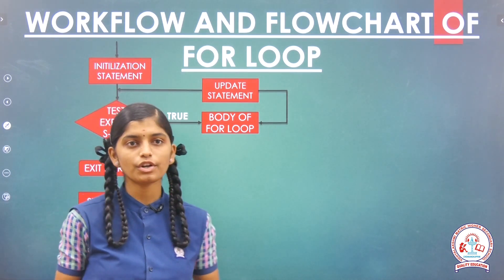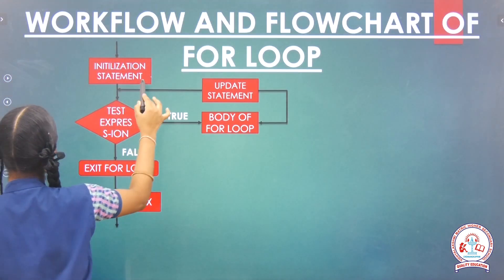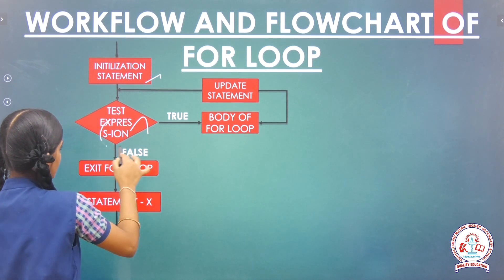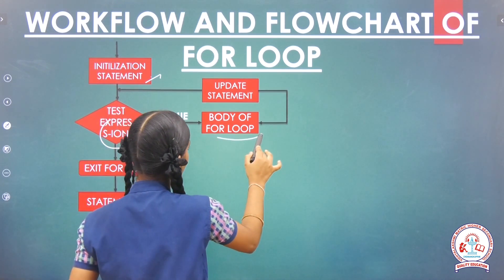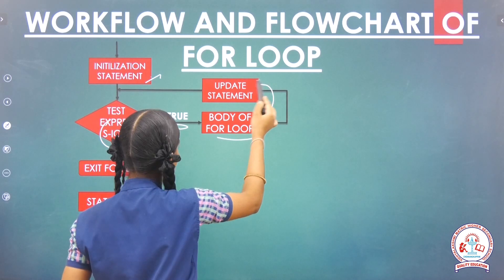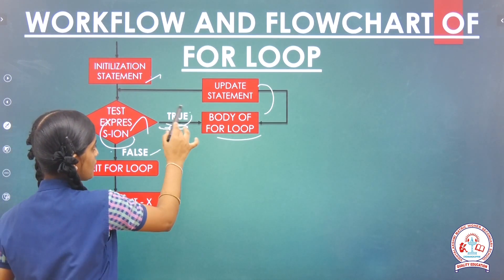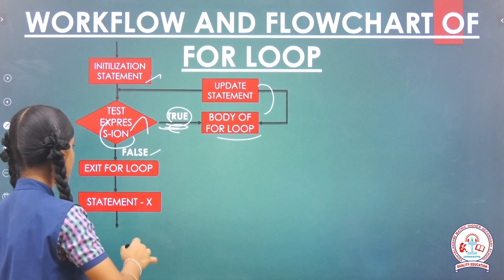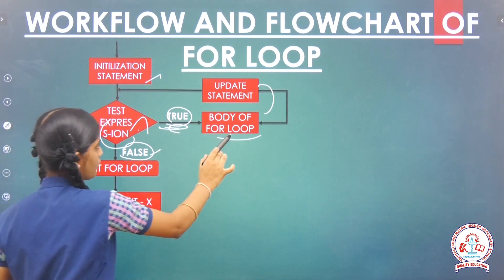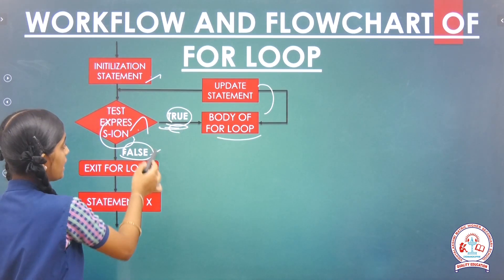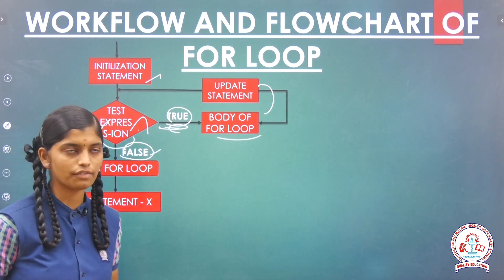Next, what is the workflow and flowchart of the for loop? First, the initializing statement will be executed. Next, it will move on to the test expression, where true or false will be determined. If the condition is true, it will move on to the body of the loop, then update — that means increment — and again come back to test expression. If the condition is false, it will directly exit the loop and execute the next statement. So this is the workflow and flowchart of the for loop statement.